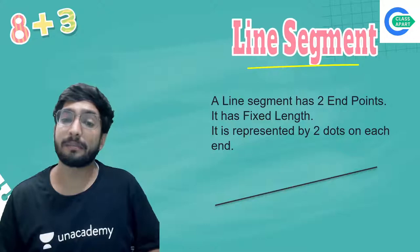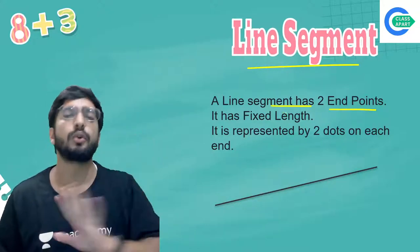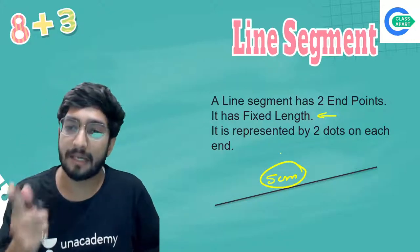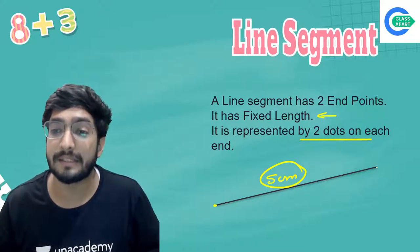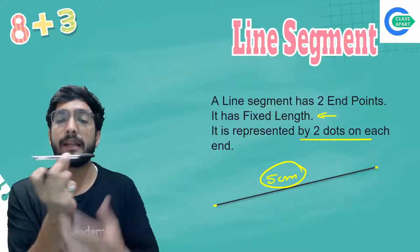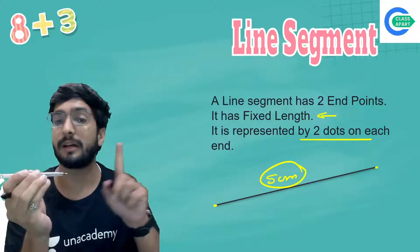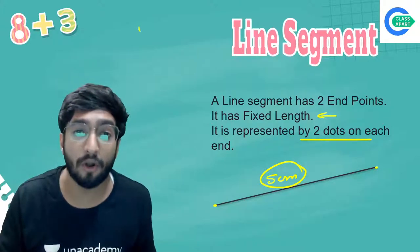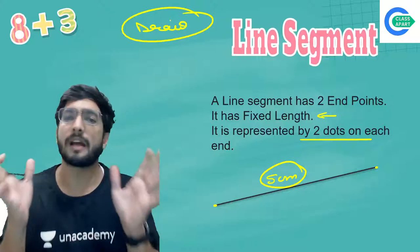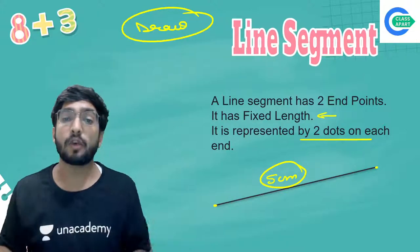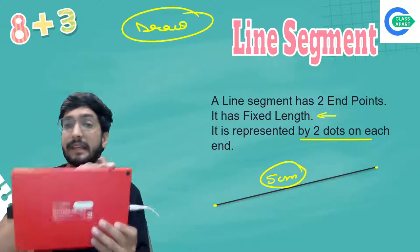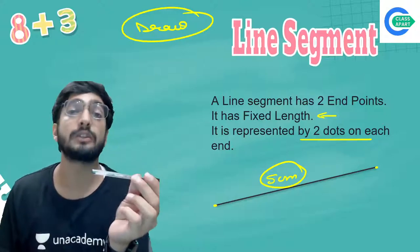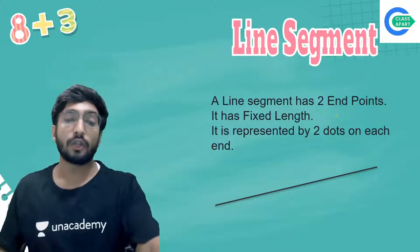If you remove the arrow from a ray, it becomes a line segment. A line segment has two endpoints — it has a fixed length. Whatever you draw on your copy, that is a line segment. For example, a pen in your hand — you cannot stretch it. Your phone's edge is a line segment. Any object with a fixed, unchangeable length between two points is a line segment.